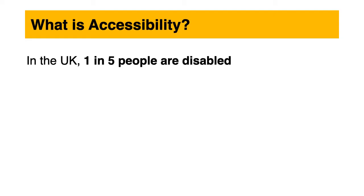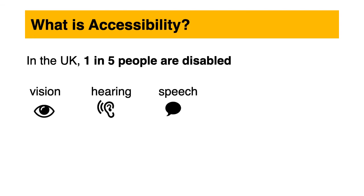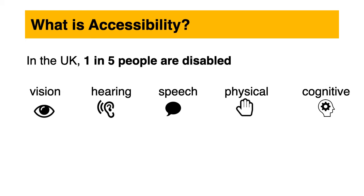So what is accessibility? In the UK, one in five people are disabled. This can affect their vision, their hearing, their speech, it can be a physical disability or a cognitive disability. This means it affects their memory or how they process things and think. Or it can be a mix of them.